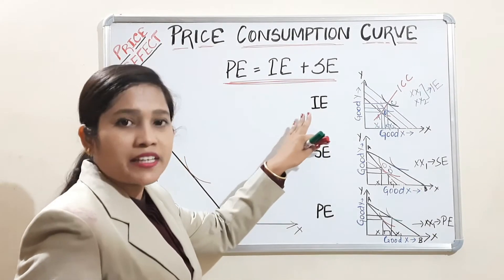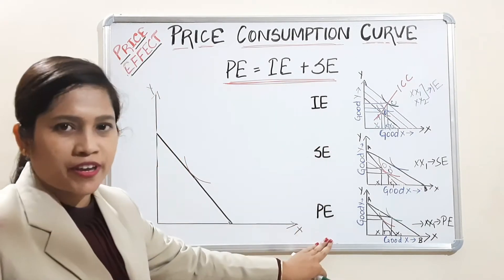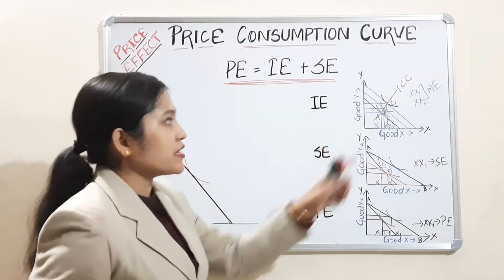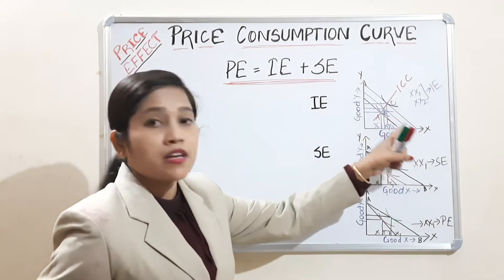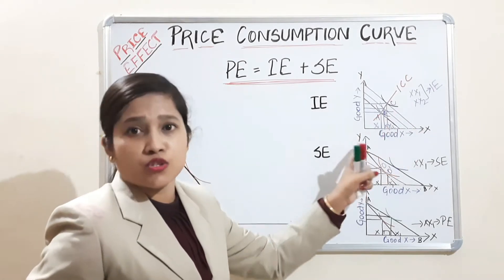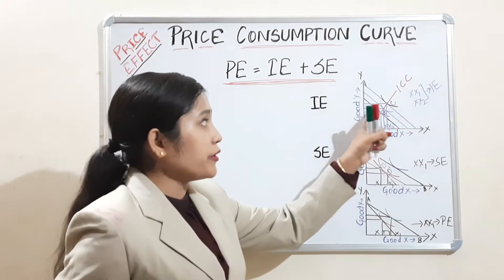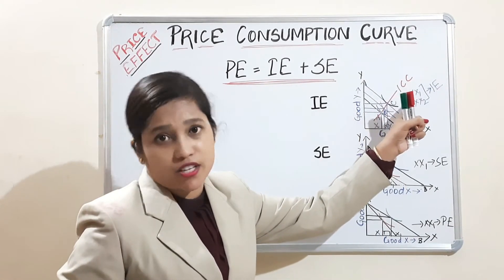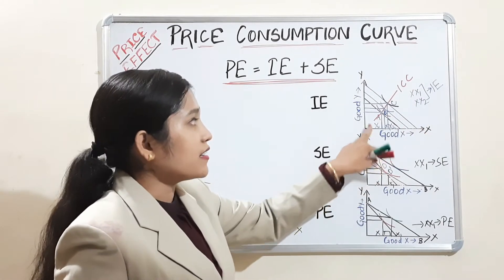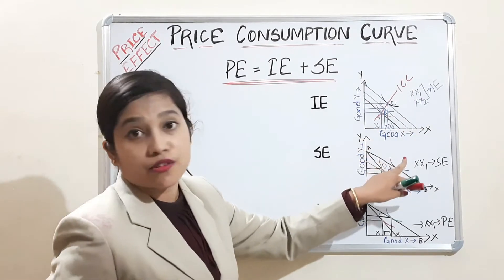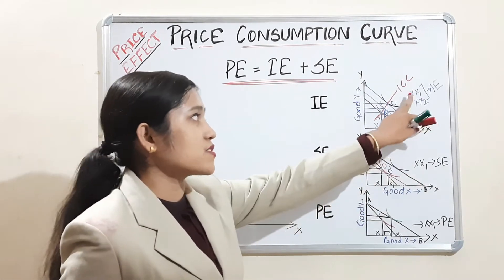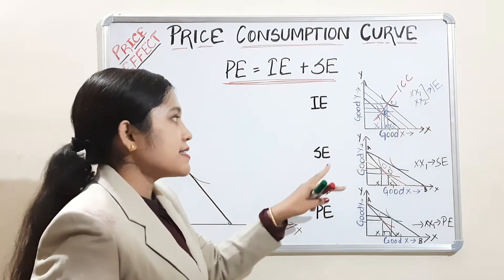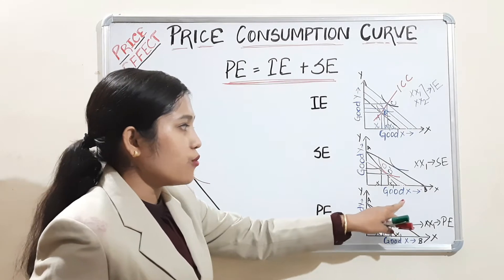I have discussed individual income effect, substitution effect, and price effect — let's revise very shortly. When income increases, the budget line shifts. When the budget line shifts, we consume more and reach a new equilibrium point. When we join those equilibrium points, it gives rise to the income consumption curve, and the change in consumption — for example, X1 to X2 — is called the income effect.